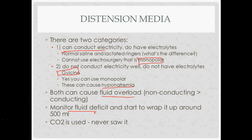The fluid deficit is something you monitor to prevent problems with fluid overload. You monitor the difference between fluid going in and coming out — the machine keeps track of this. You also need to account for fluid that may have leaked out if the seal isn't very good, usually collected in a bag sitting under the patient. If the fluid deficit gets to over half a liter, you want to start thinking about wrapping the procedure up or possibly stopping. CO2 is another distension media used, mainly for diagnostic procedures.